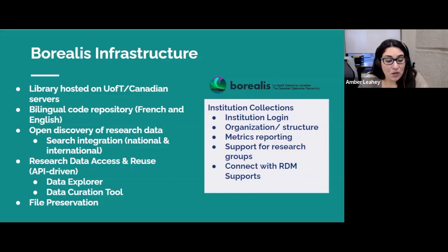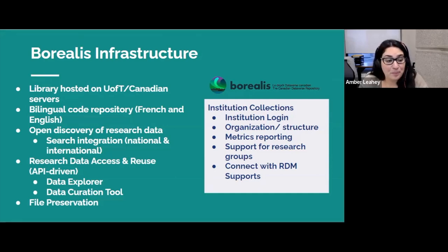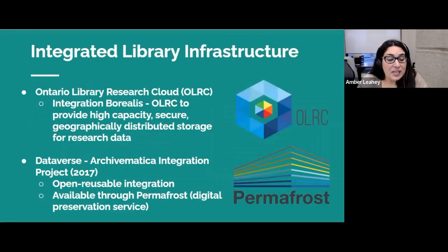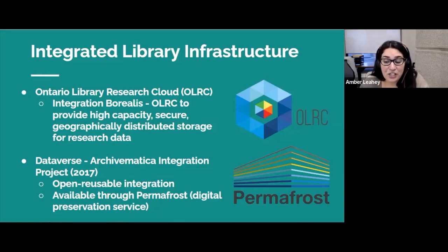Borealis has built-in file level preservation, including monthly integrity checks to ensure data are reliably stored and backed up. The repository as a whole is structured into institution-specific collections for deposit and sharing. Borealis data are stored on Canadian secure library-hosted storage through the Ontario Library Research Cloud, a geographically distributed cloud storage for research data, with file preservation support provided through monthly file integrity checks in combination with OLRC storage.